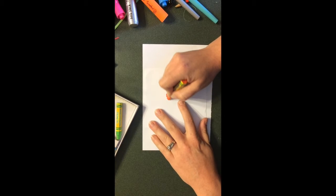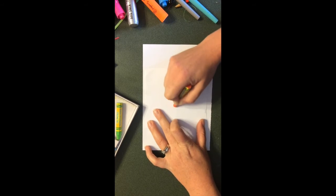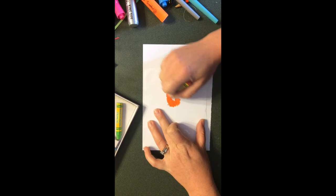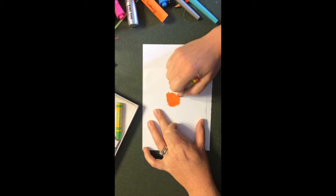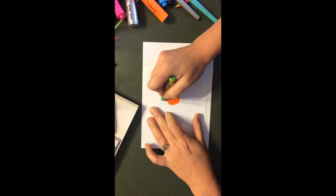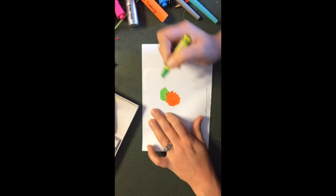So tie-dye is traditionally in a circle shape, so I am just scribbling. I'm pressing down to get some good color. You can go any shape at all. I think when we did this at school several kids did hearts or stars or they did the letter of their name.